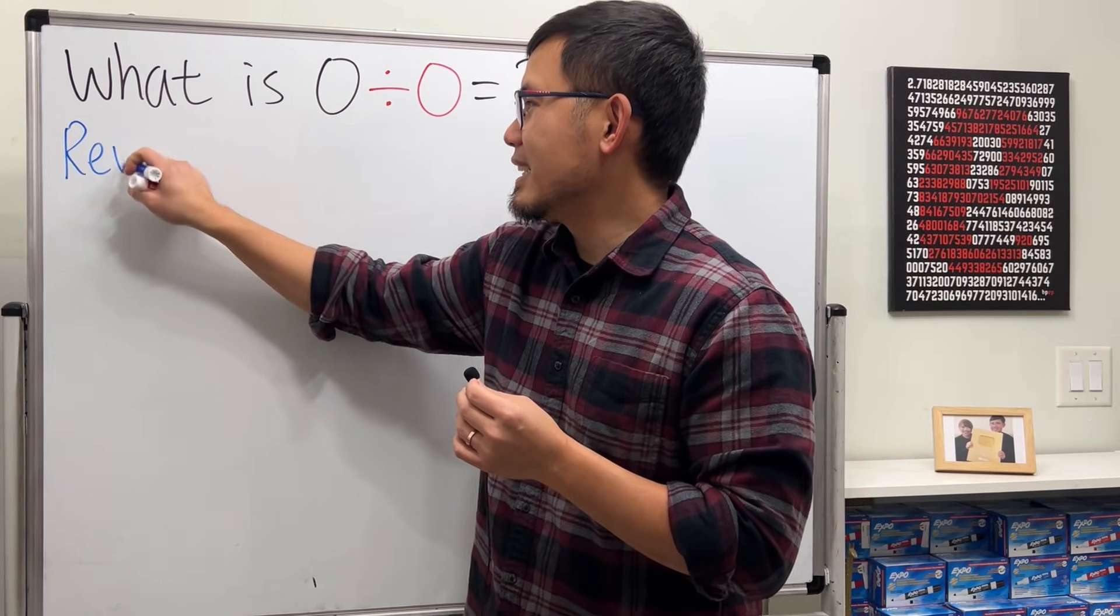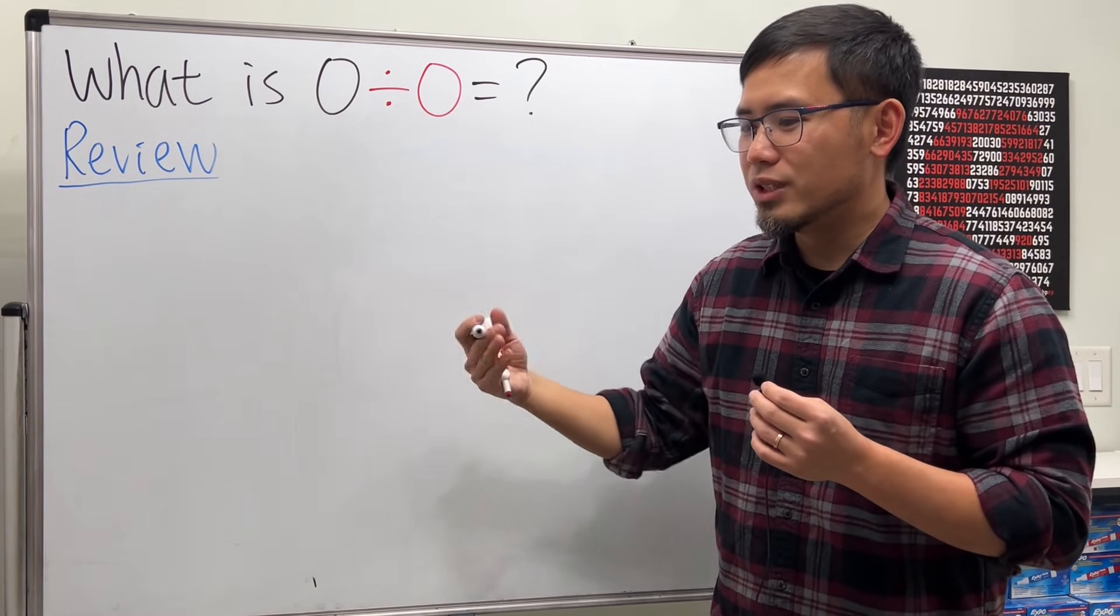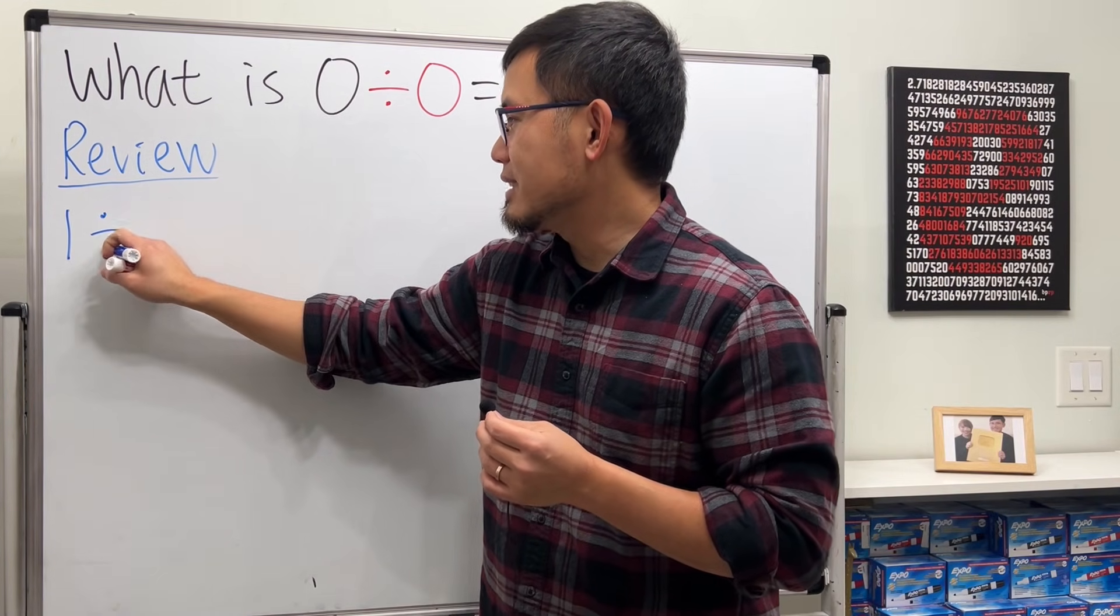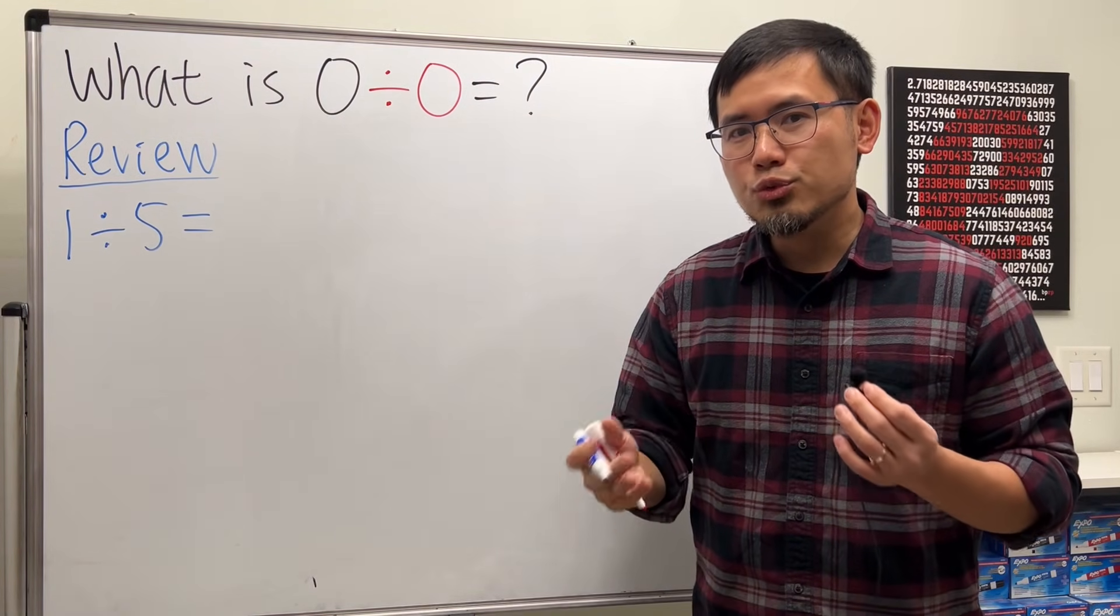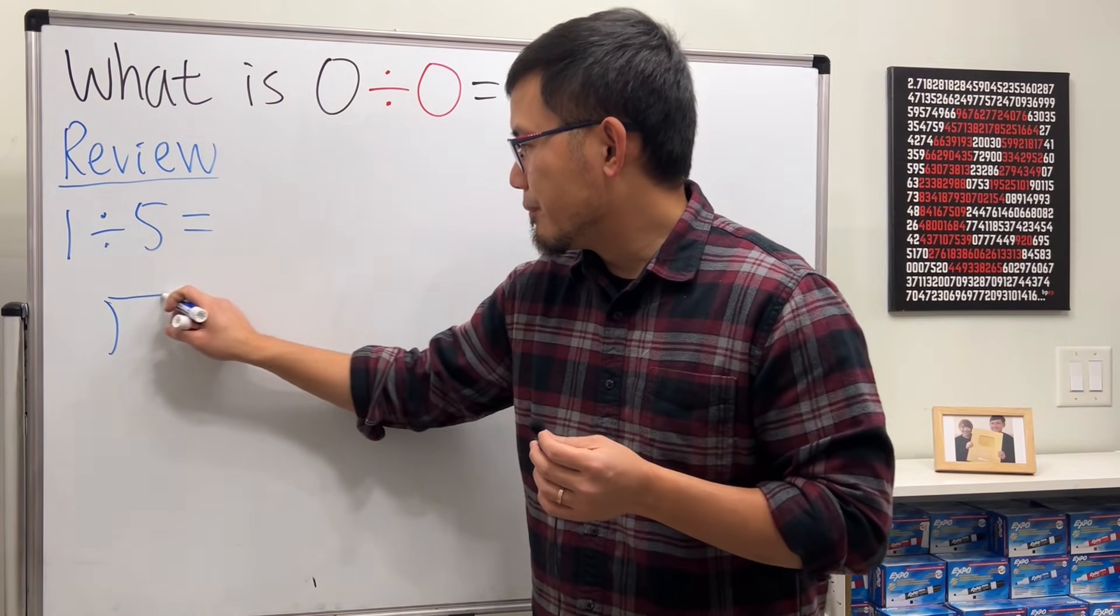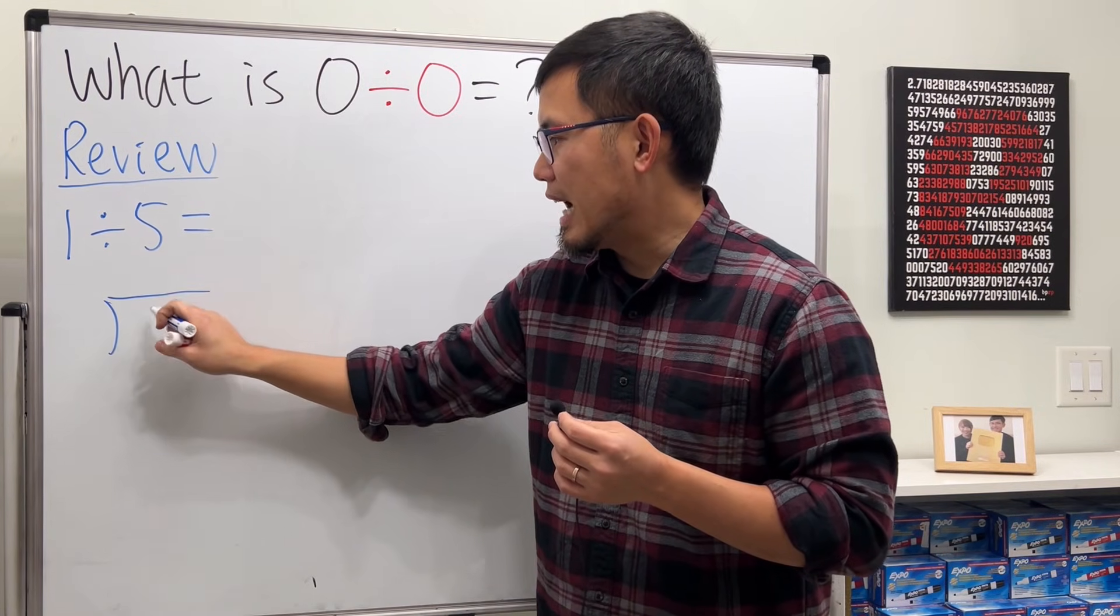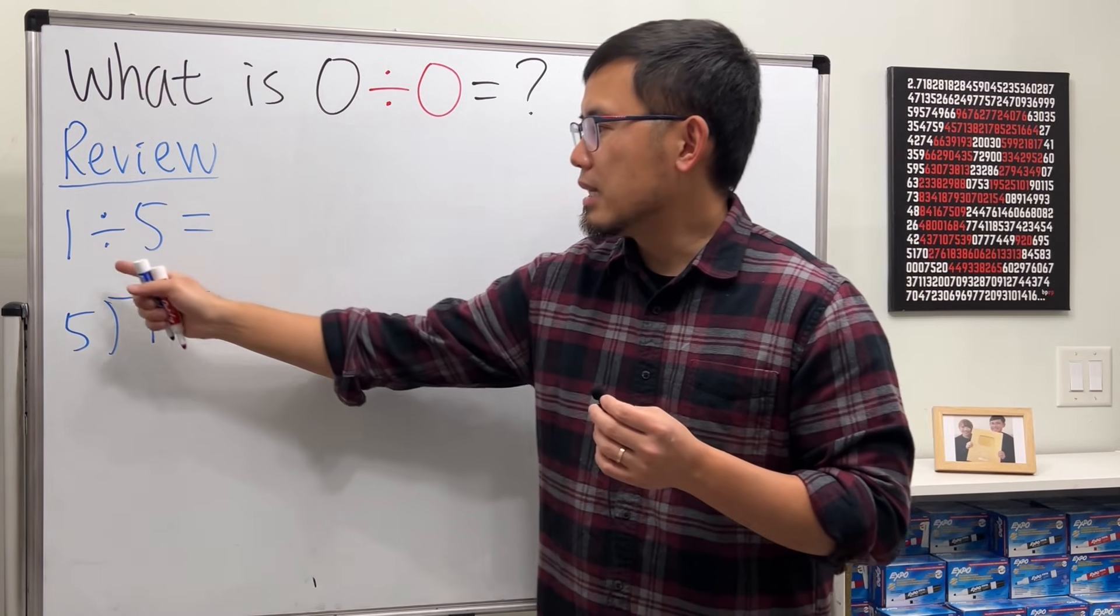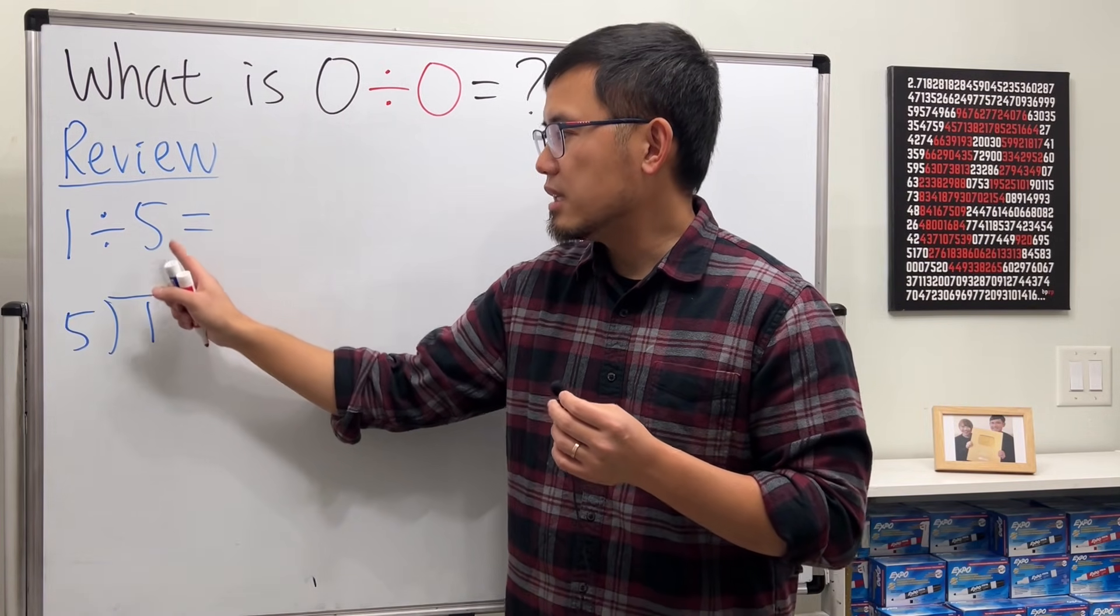All right, here we go. Zero divided by zero. Let's review long division real quick. Just like last time I showed you guys a divided by two and two divided by a, today let's do something different. Let's say one divided by five. And I love long division because it provides you an algorithm to work out division. Here we go. Remember, you always put the first number inside and then the second number on the outside.